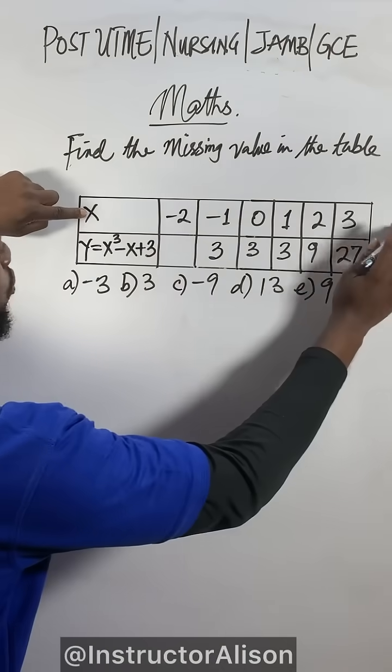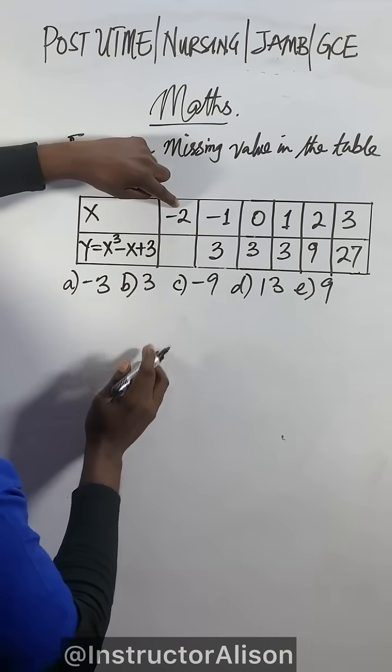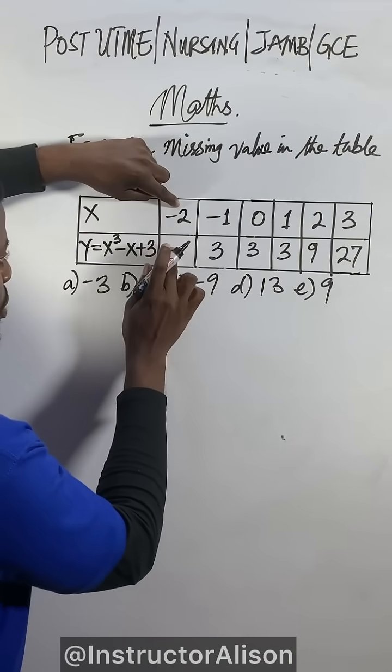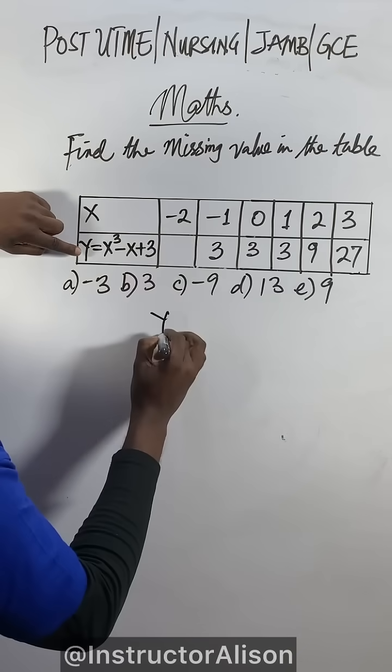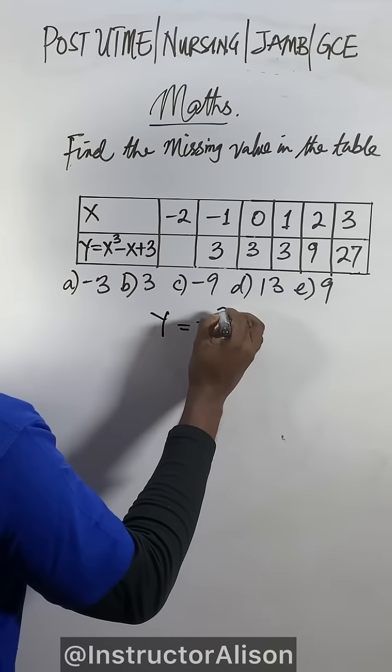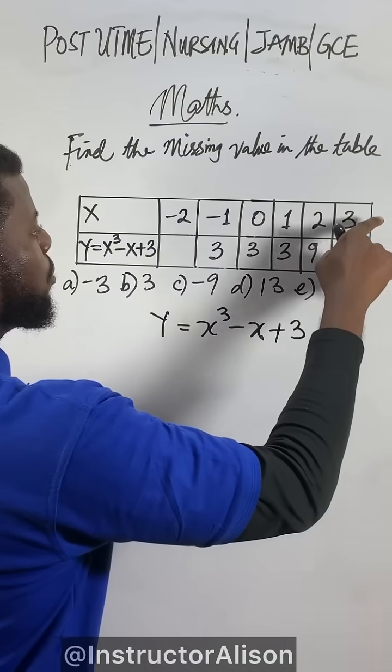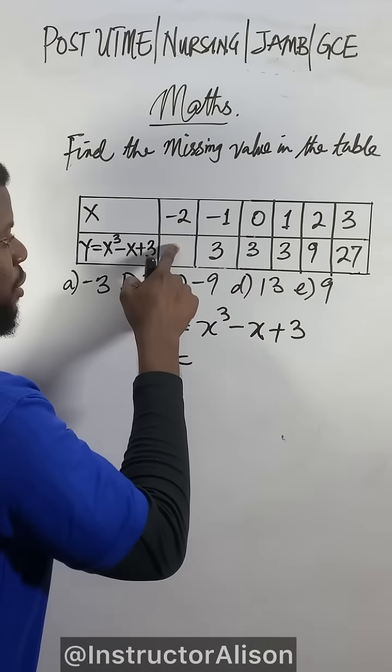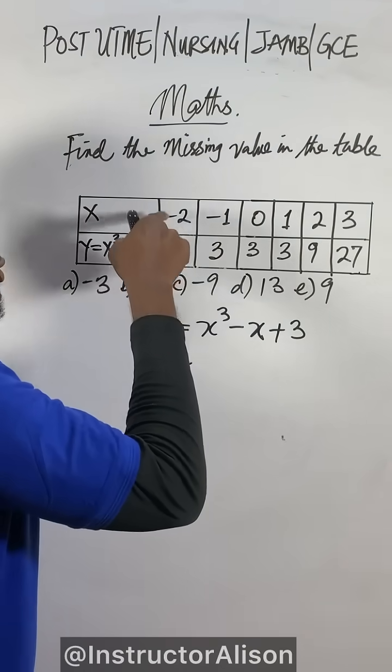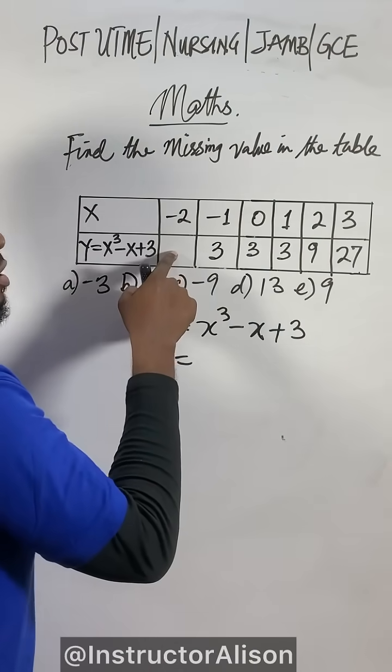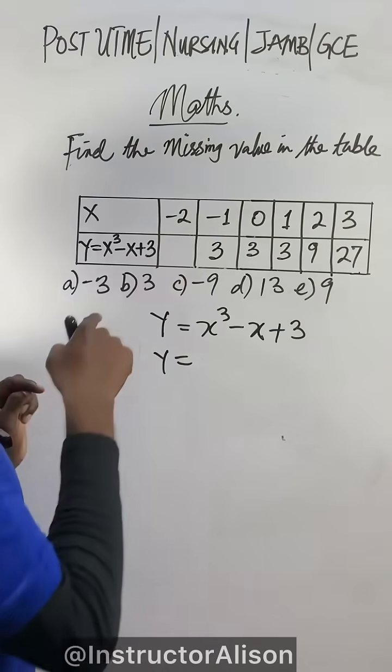Since you get this x value complete and this x value here, but you don't get the y value, first write this equation we see here: y = x³ - x + 3. To find the value of this y value right there, you will use this x value to get it.